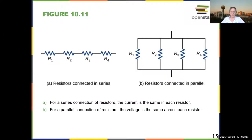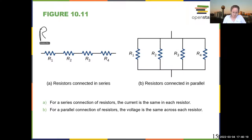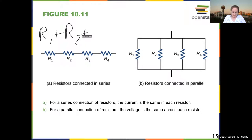We're going to do some calculation of equivalent resistances. When you have resistances in series, you add these — you would add the resistances. So the effective resistance of the circuit element on the left is just the sum of these resistances.